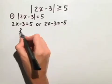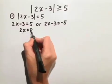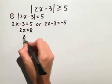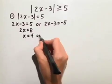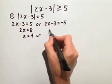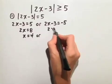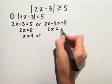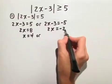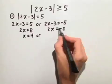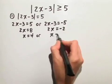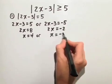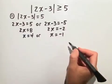For the first equation, we have 2x equals 8, so x equals 4. For the second equation, 2x equals negative 2 when we add 3 to both sides, so x equals negative 1 when we divide both sides by 2.